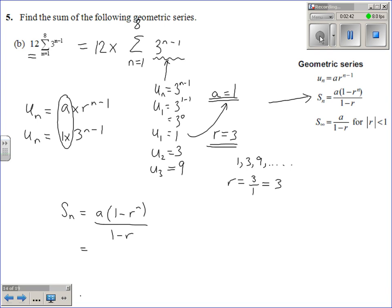which equals, a is equal to 1. 1 minus r is 3. To the power of n, well we're told that there's 8 terms because of this bit here at the top. So, and then we're dividing by 1 minus r and r was 3.